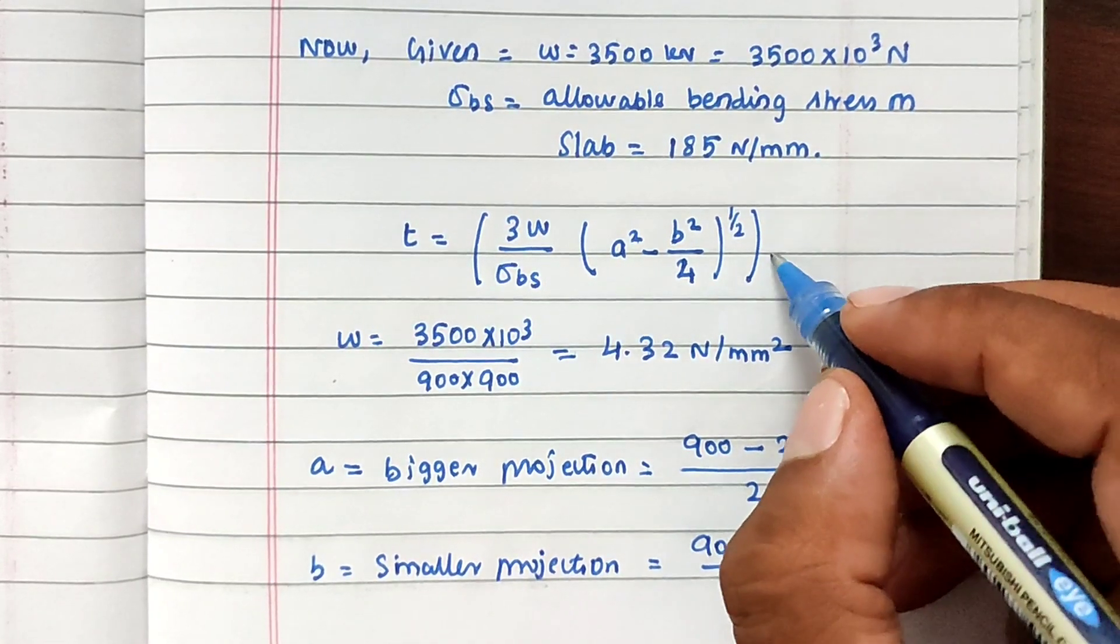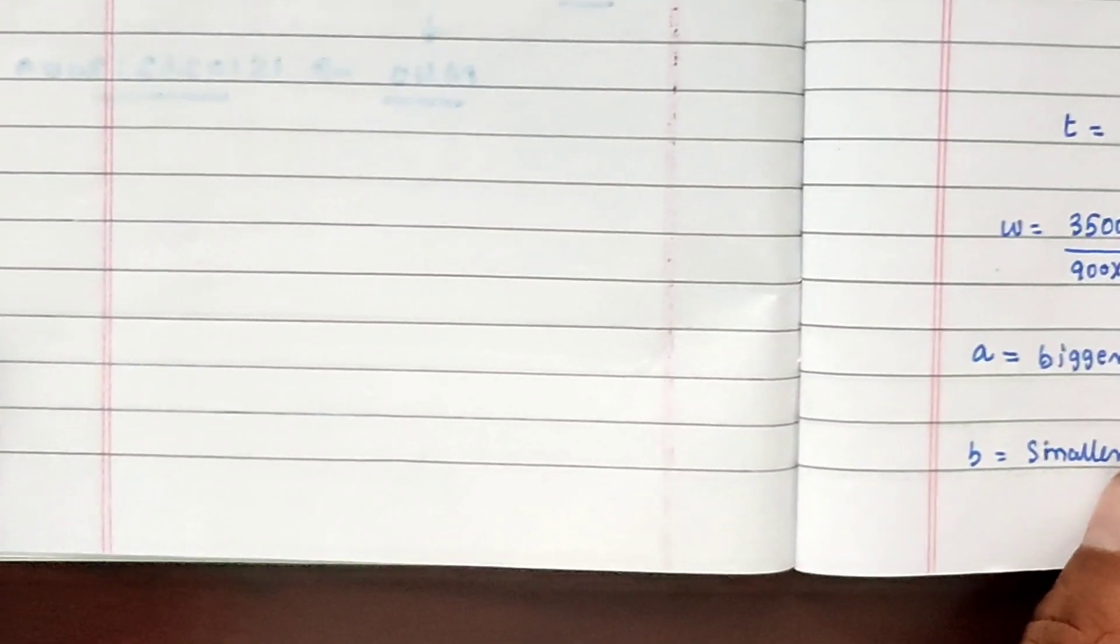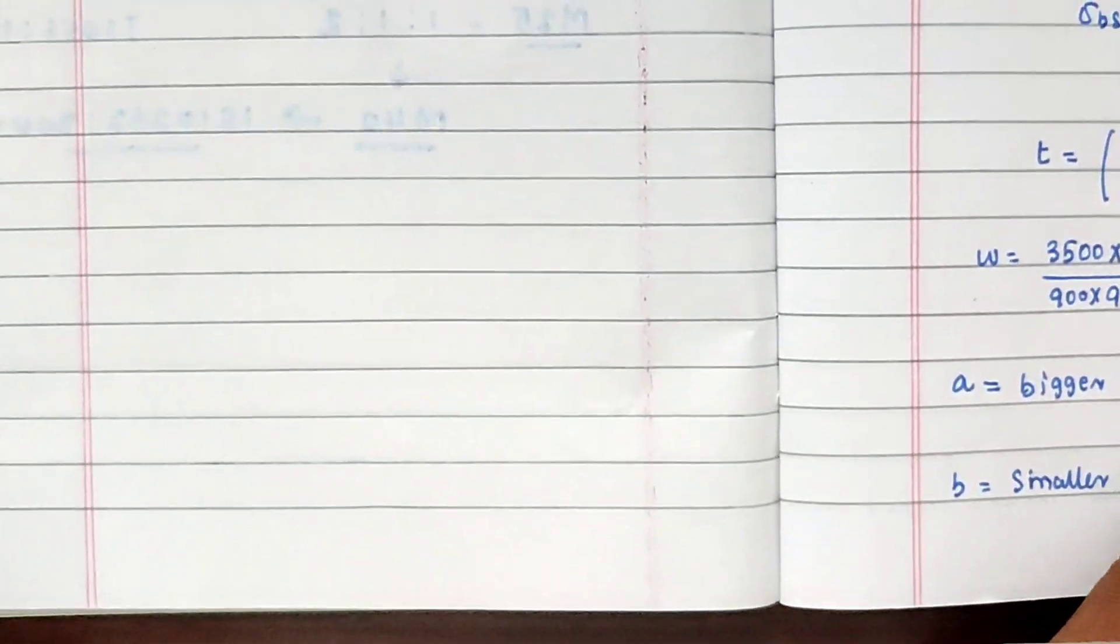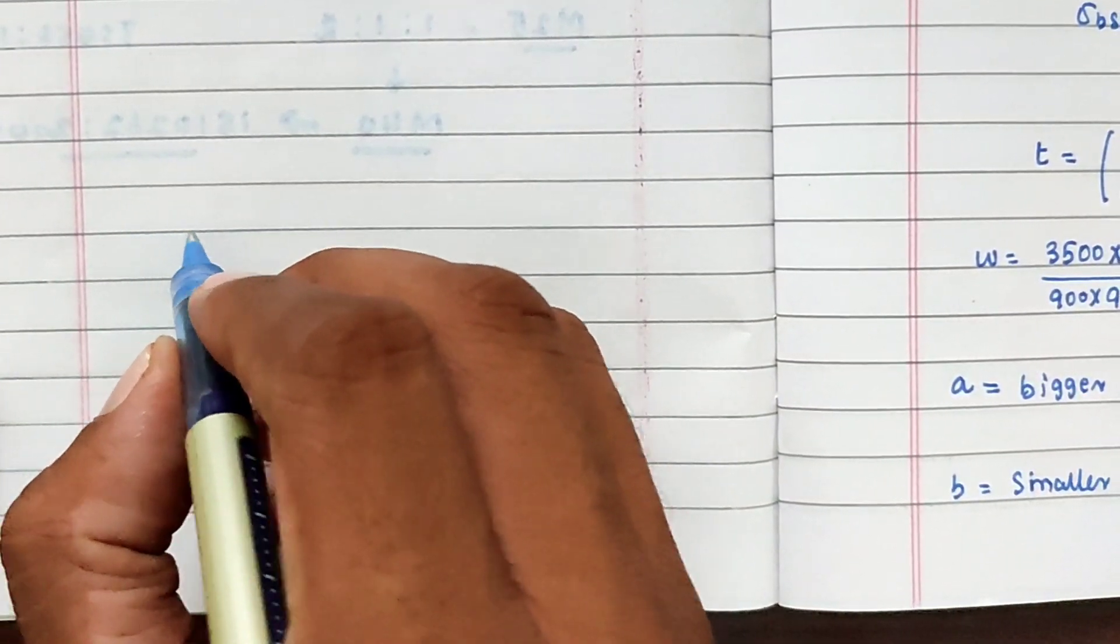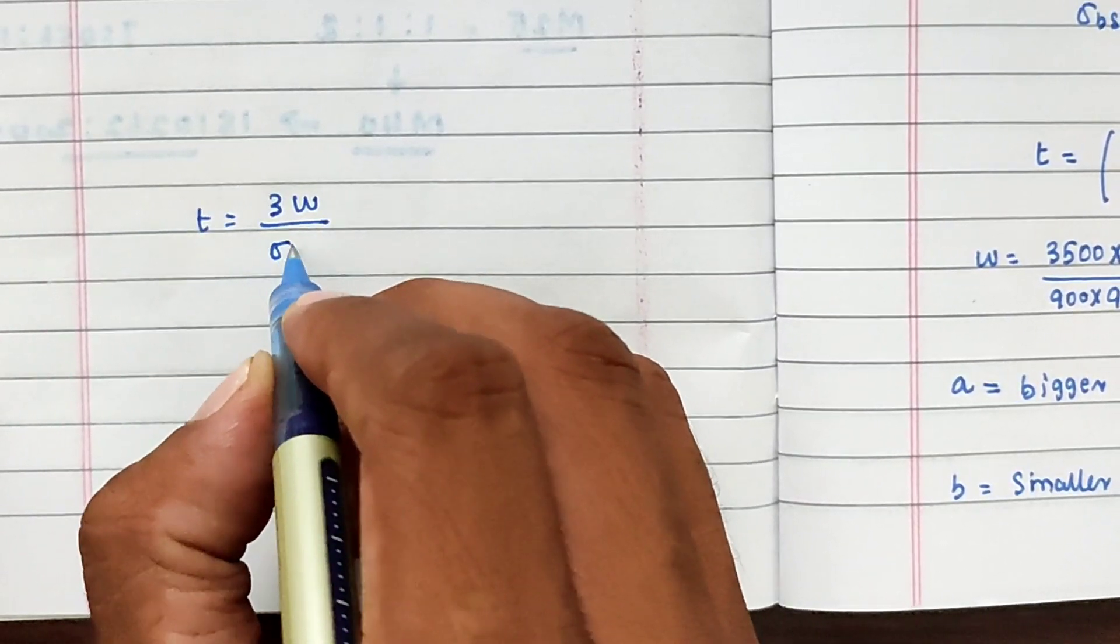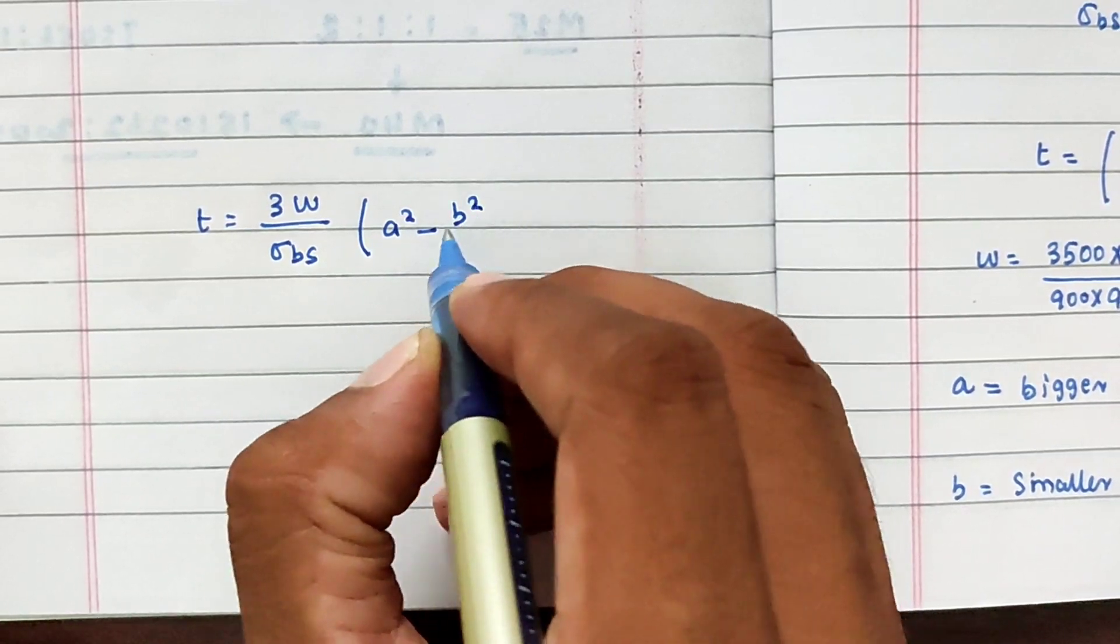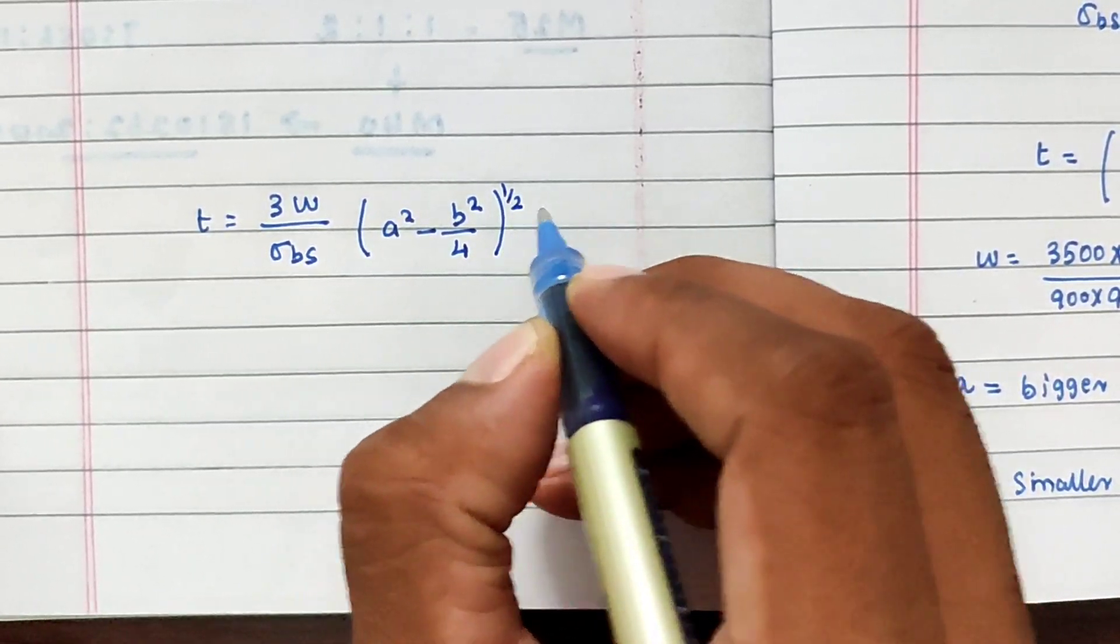So we can substitute all the values. Now T equal to 3W divided by Sigma BS into A square minus B square divided by 4, whole power 1 by 2.